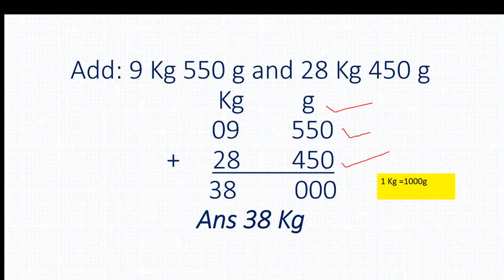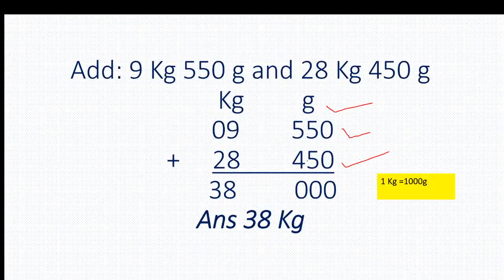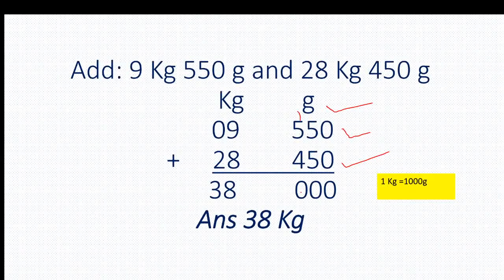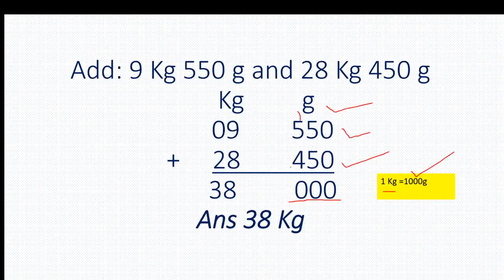We will start addition from the gram column and after that we will do the kg column. 0 plus 0 is 0. 5 plus 5 is 10 — 0 we write here and 1 will be added to the next column. 1 plus 5 plus 4 equals 10. So children, here we are getting 1000. As you all know, 1000 gram equals 1 kg.